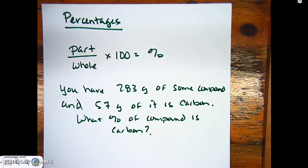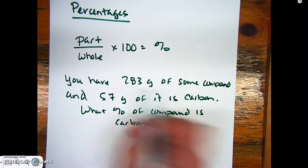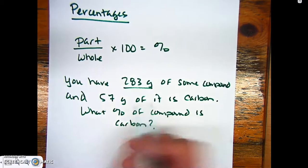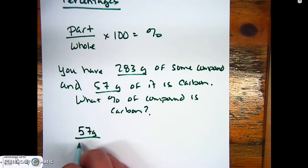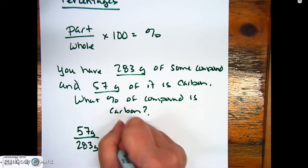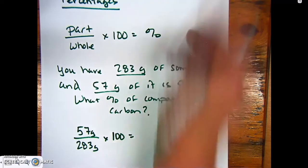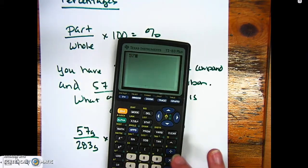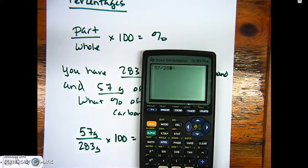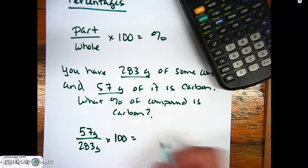What we'd have to do is we have our whole here and our part there. We plug it into our equation: 57 grams of carbon divided by 283 total grams of the compound, multiply by 100, and we get - using my calculator - 57 divided by 283 times 100, which gives us roughly 20%, or 20.1%.